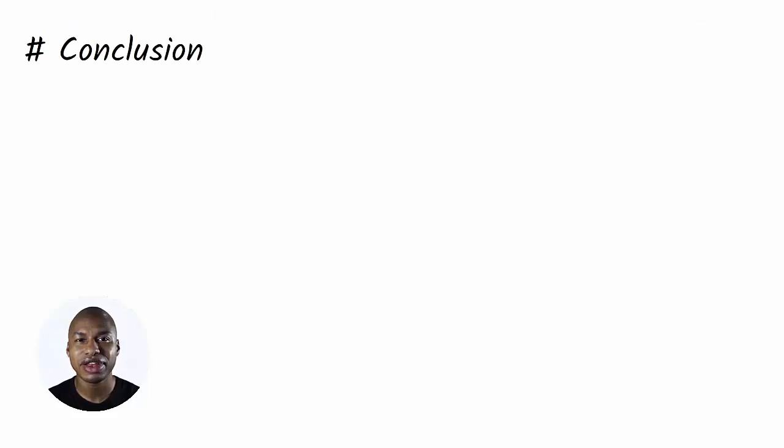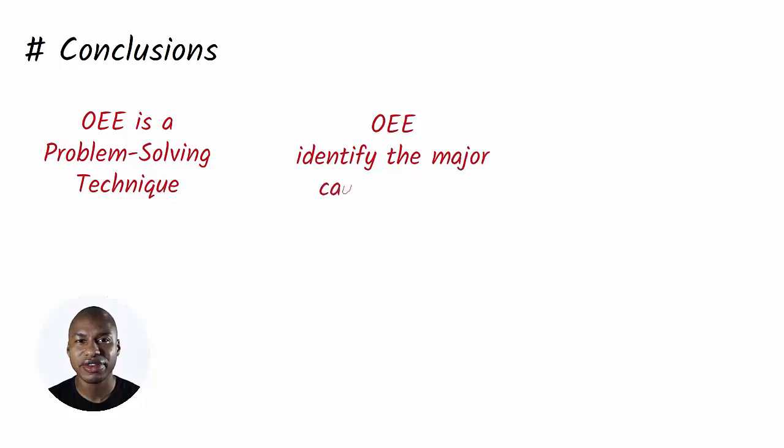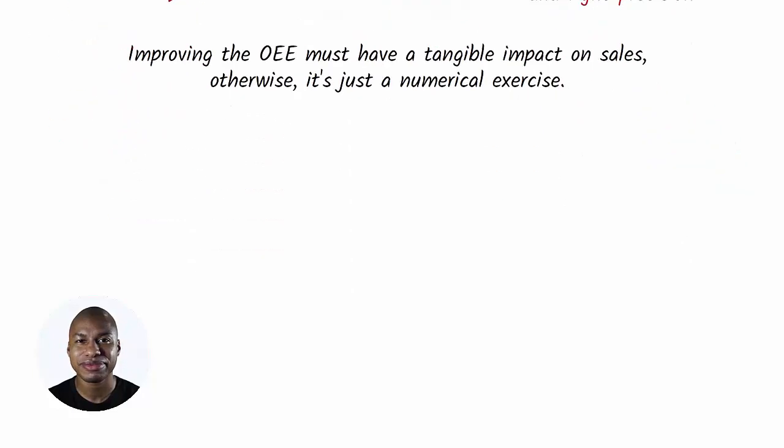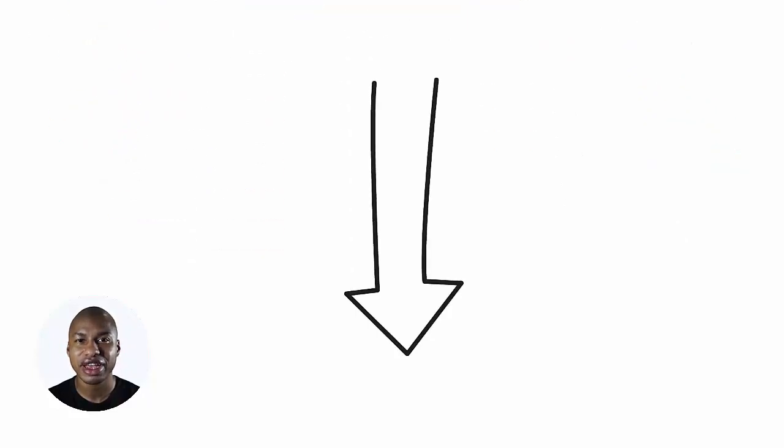Conclusions. The OEE calculation is a problem-solving tool with a specific focus on machines. The OEE needs to be calculated to identify the major causes of loss of efficiency and remedy them. There is no need to waste time and resources on the wrong machines and with unnecessarily precise calculations. Improving the OEE must have a tangible impact on sales, otherwise it's just a numerical exercise. You can find more info in the description below.